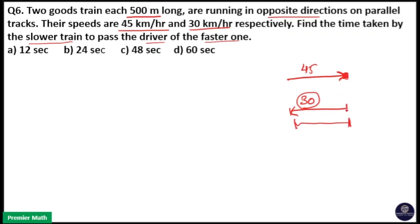The end of the slower train should pass the faster train's driver. That means the length covered will be the length of the slower train, that is 500 meters. So the time taken to pass this driver by the slower train